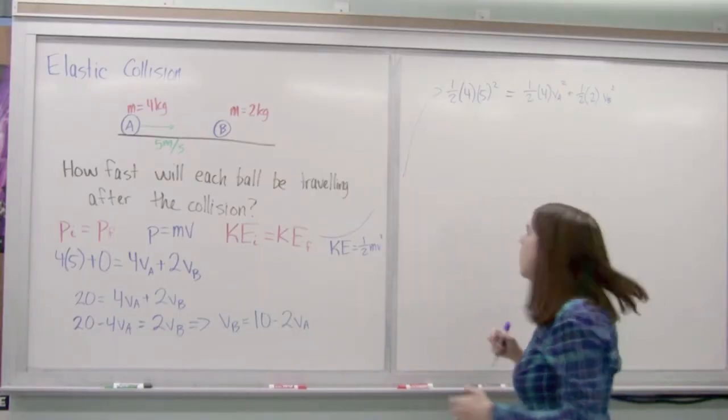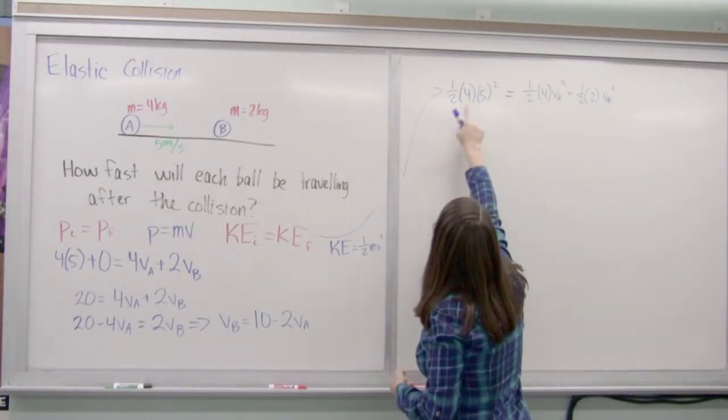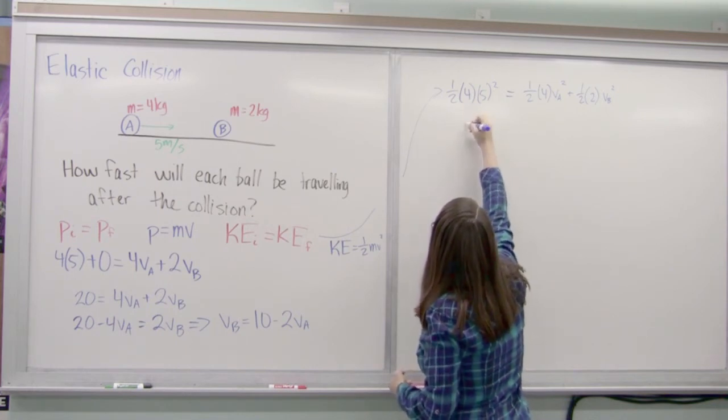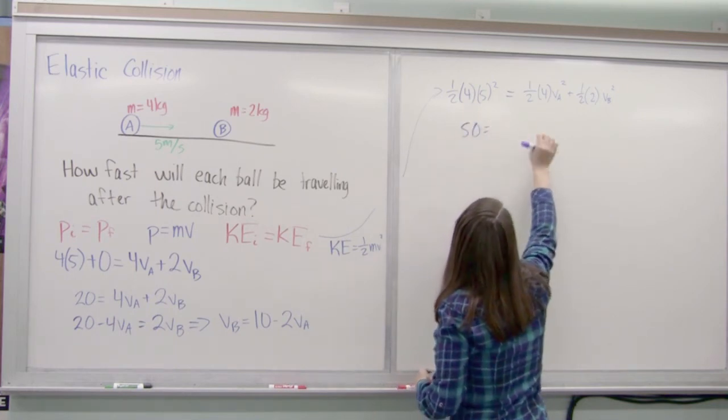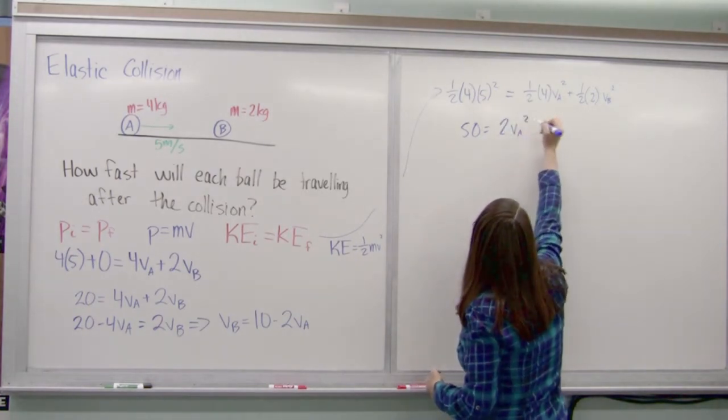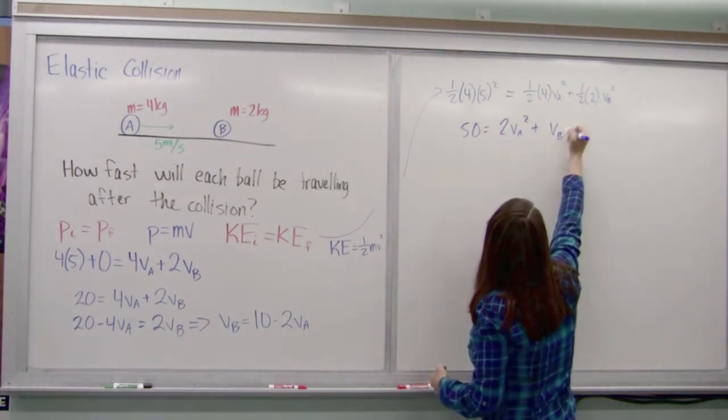Okay, so let's start trying to solve this out a little bit. 1 half times 4 is 2. 2 times 25. So I've got 50 on this side. 1 half times 4. So that's 2 VA squared plus VB squared.